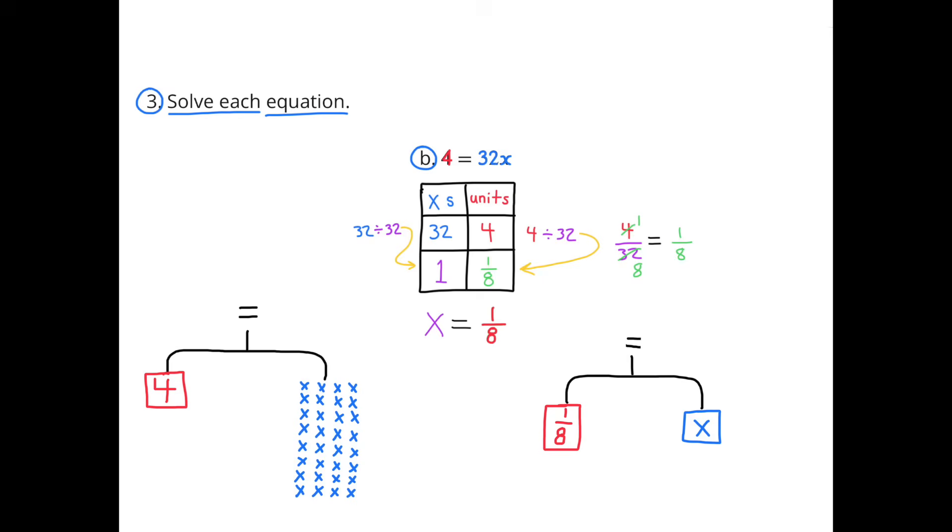I also showed it as a hanger. 4 units on the left side is in balance with 32x's on the right-hand side. The hanger that has 1x on the right-hand side is in balance with 1 eighth unit. x equals 1 eighth.